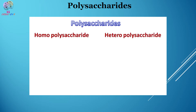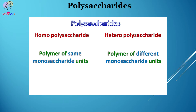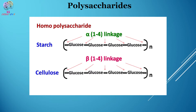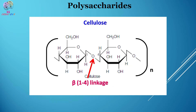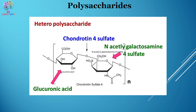Polysaccharides are further classified into homopolysaccharides (or homopolyglycans) and heteropolysaccharides (or heteropolyglycans), depending on whether they are made up of the same or different types of monosaccharide units. Examples of homopolysaccharides include starch and cellulose. In starch, glucose molecules are held together by α-1,4 linkage, while in cellulose, glucose molecules are held together by β-1,4 linkage. Examples of heteropolysaccharides include chondroitin-4-sulfate, which is made up of repeating units of glucuronic acid and N-acetyl galactosamine-4-sulfate.